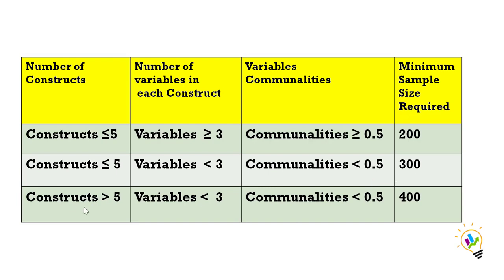If the number of constructs increases — that is, more than five — and the number of variables in each construct decreases to less than three, and communality is also reducing to less than 0.5, then we will need more samples: 400 samples are required.